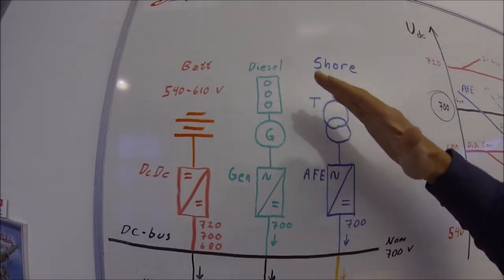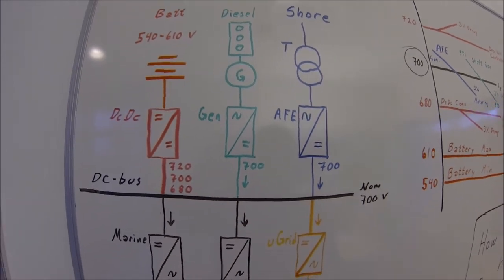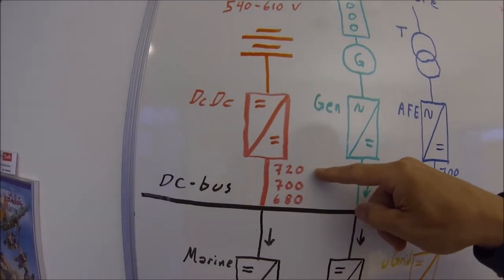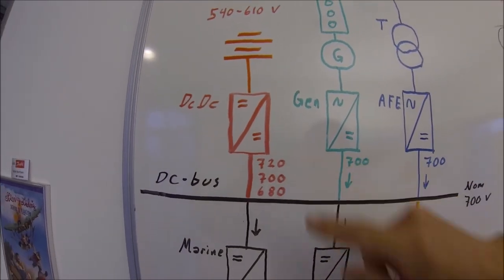In the other direction, let's say you are feeding more energy into the DC bus than your consumers can absorb. Then the voltage will increase until 720 volt, which is my over-voltage controller level.